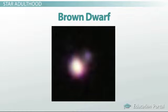Sometimes, though, protostars don't get big enough or hot enough for hydrogen fusion to start in their core. If this happens, the protostar is called a brown dwarf.